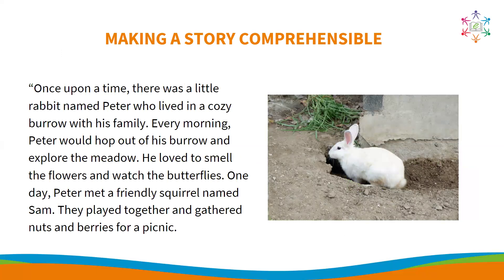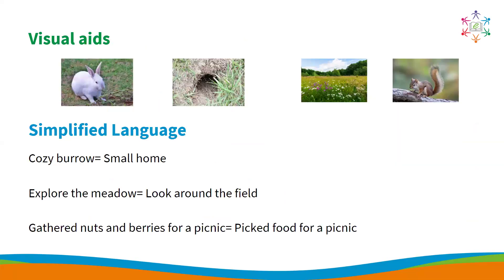Now we'll see how we can make a story comprehensible for our students, especially those who are beginner English learners. Use visual aids — incorporate pictures or illustrations related to the story, as visuals can help students understand and remember key concepts. Simplify language: for example, instead of 'a cozy burrow,' use 'small home'; instead of 'explore the meadow,' use 'look around the field.' Use simple and clear language and break down complex sentences into shorter, more understandable phrases.